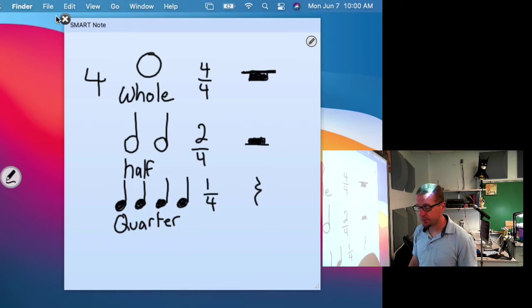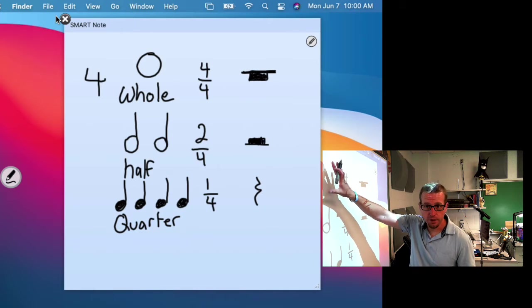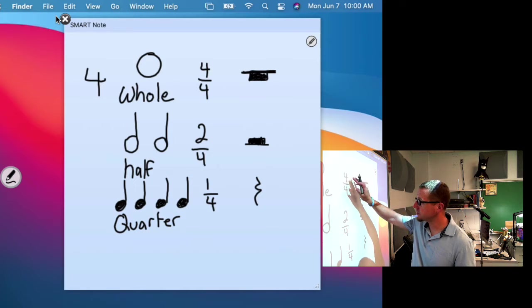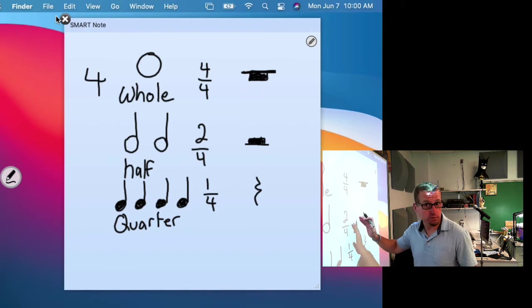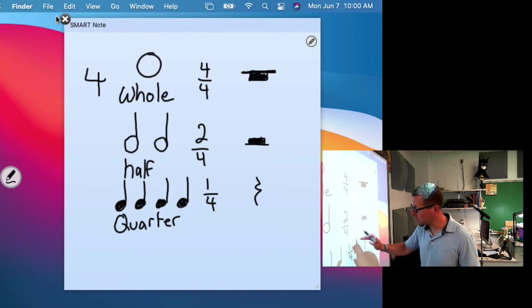So quick recap before we get to eighth notes. Whole note takes up a whole 4 beats, so 4 beats. Half note takes up half of 4 beats or 2 beats. Quarter note takes up 1 quarter of 4 beats or 1 out of 4.